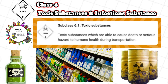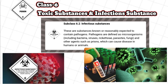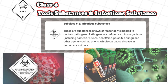Class 6: Toxic substance and infectious substance. Subclass 6.1, Toxic substances: which are able to cause death or serious hazard to human health during transportation. Subclass 6.2, Infectious substances: these are substances known or reasonably expected to contain pathogens. Pathogens are defined as microorganisms including bacteria, viruses, rickettsiae, parasites, fungi and other agents such as prions, which can cause disease in humans or animals.